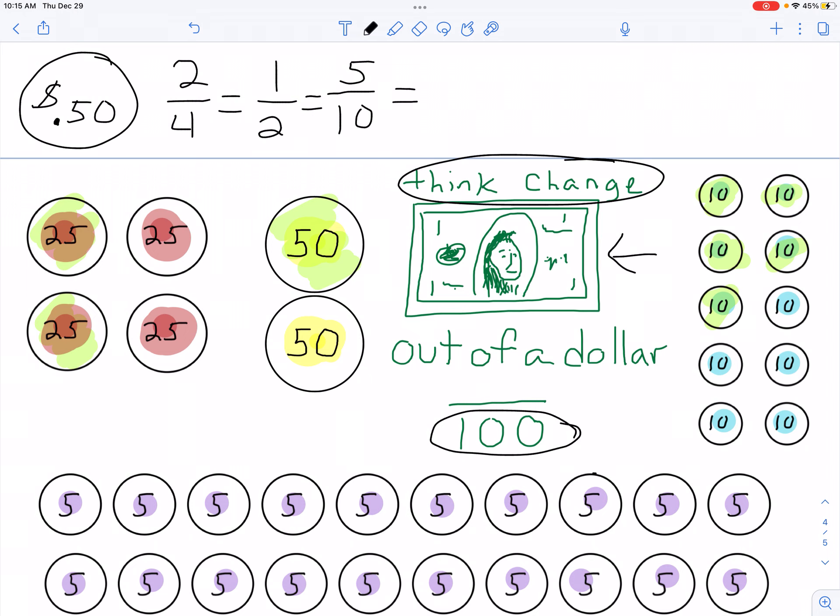If we're talking nickels, we can go 10 nickels is 50 cents. And there are 20 nickels that make up a dollar.